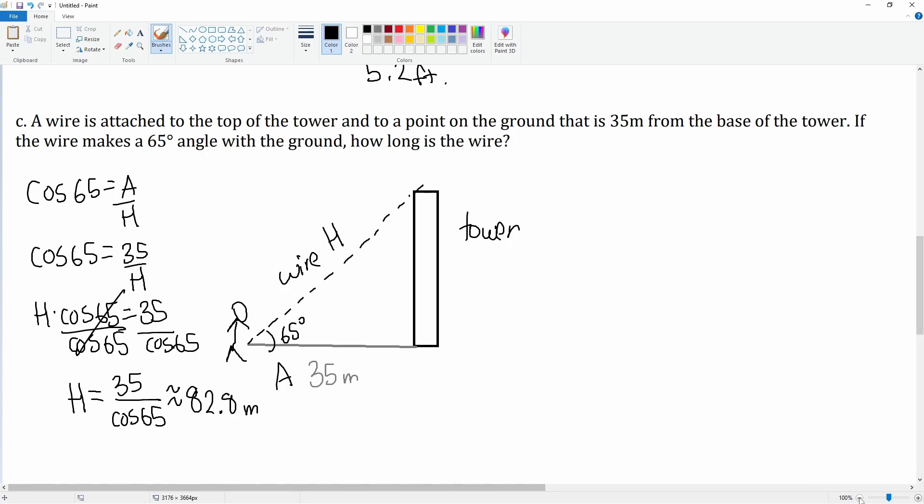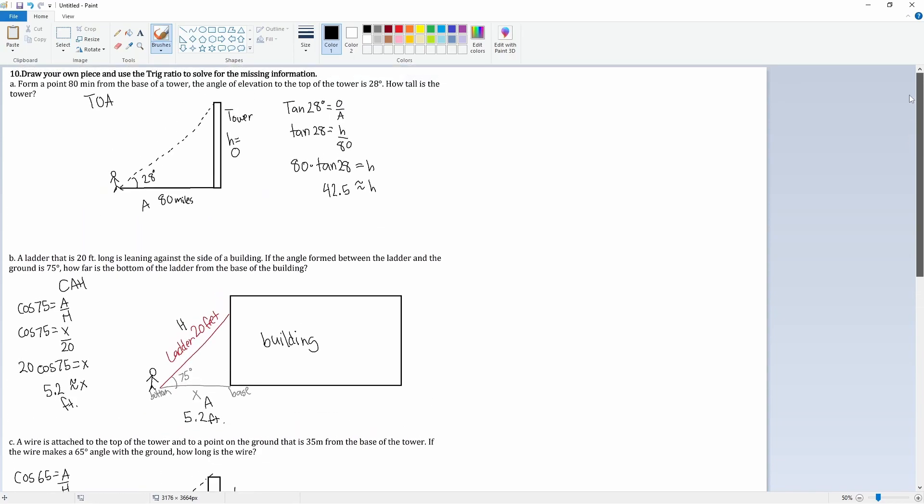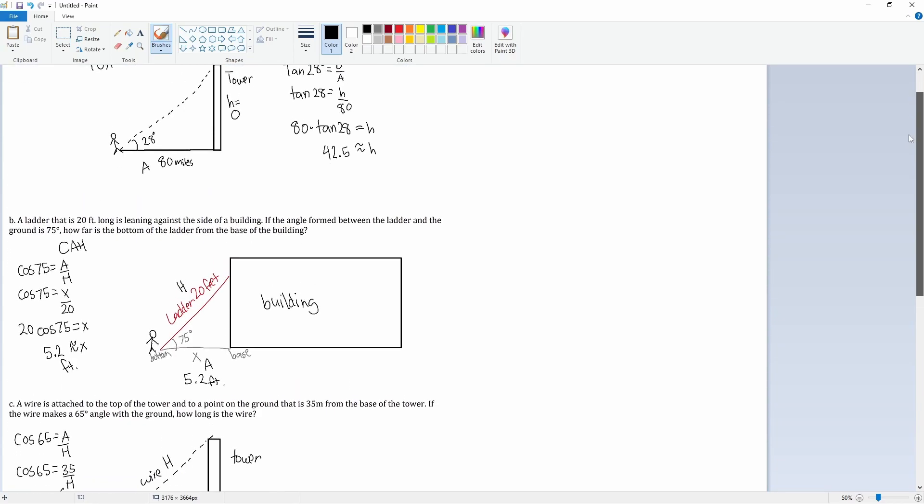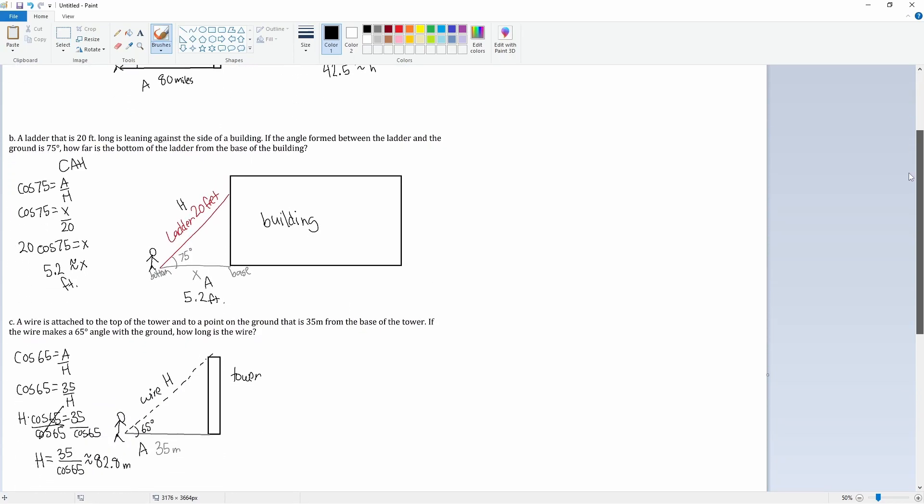So there you go, that is how you use your trig ratios to solve for a missing piece in an application problem.